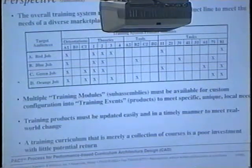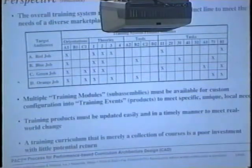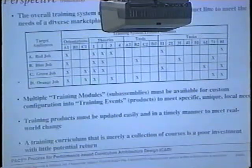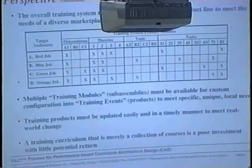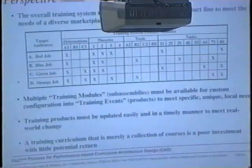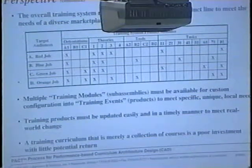These multiple training modules — our term for sub-assembly modules — must be available for custom configuration in training events. You can have standard deliverables and ways to do it custom. Take it apart at the module level and reconfigure to meet a specific customer's need. That provides flexibility in meeting those needs. Training products must be updated easily. We know there is going to be continuous change — that is the only guarantee we have. So if we can anticipate that, we can better deal with it as it comes, day after day, quarter after quarter.